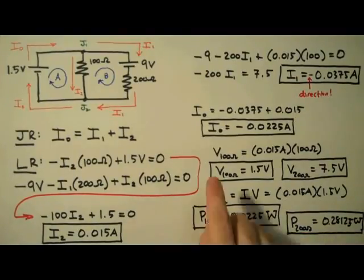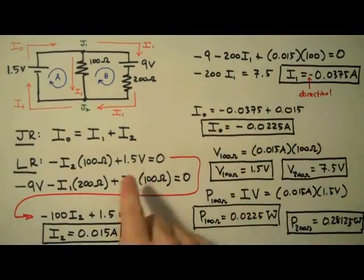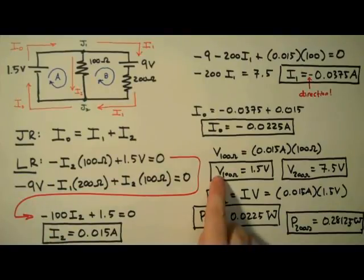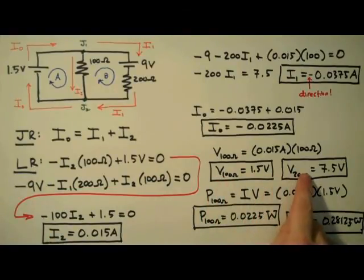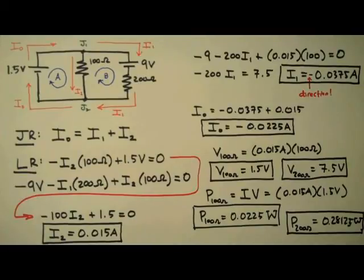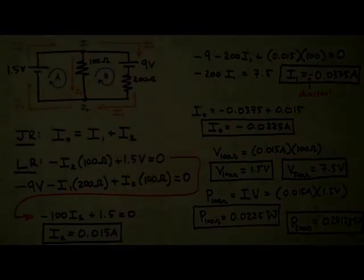And we're done. So there you have it — the current through, the voltage across, and the power dissipated by resistors using Kirchhoff's rules. I'm Jesse Mason, I hope this was helpful to you, and until next time, happy learning.